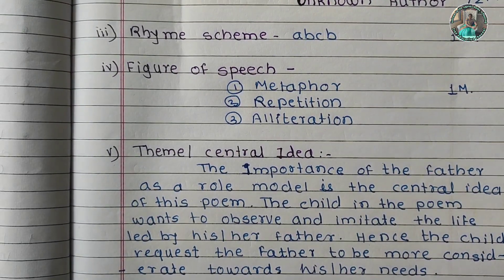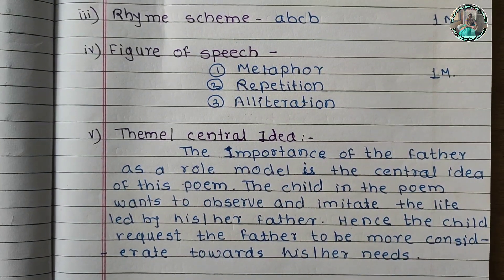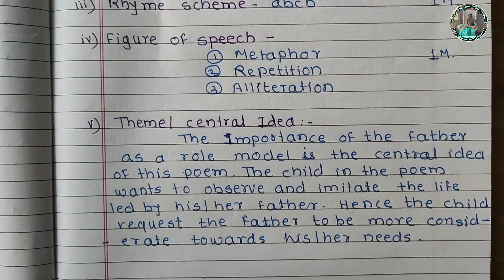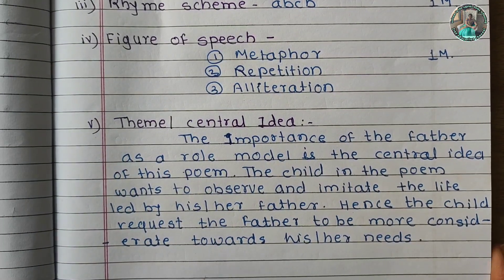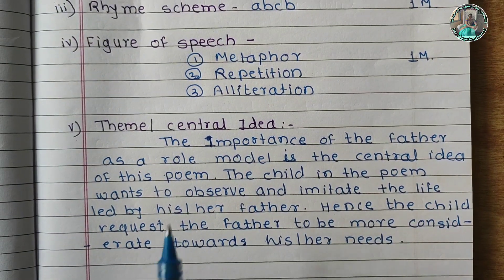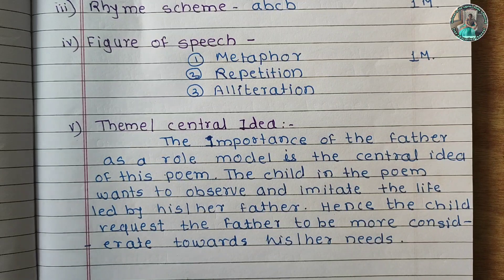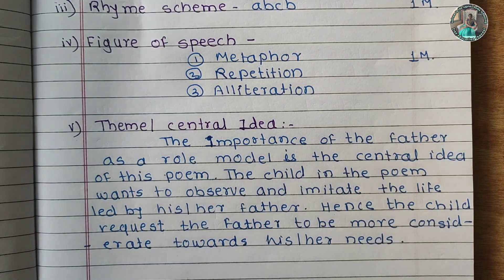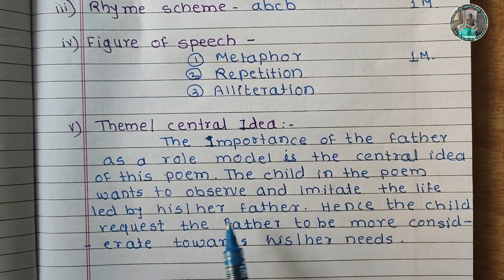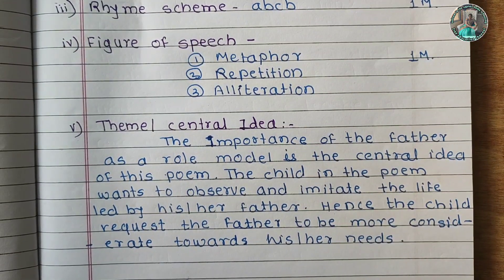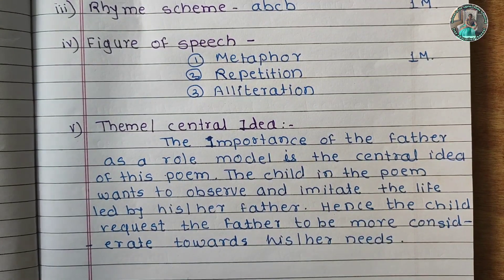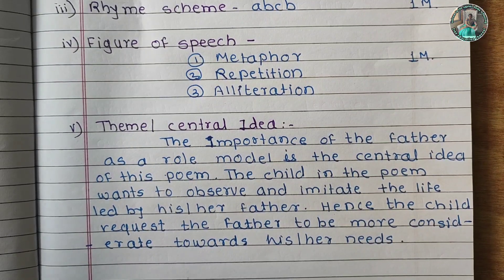Aani pude asnare theme kiva central idea — kaviteta nimki kashavar lakat ahe, kaviteta ava aachai chhi samzun geta, nimki kashavar lakat ahe. The importance of the father as a role model is the central idea of this poem. Vadhilancha mahatva, aapleya saathi asnara adarsh vyakti, akiva aapleya la kaytri banu ichchh asnar — vadhilaan sar ka apleya la banaycha. The child in the poem wants to observe and imitate the life lead by his or her father.